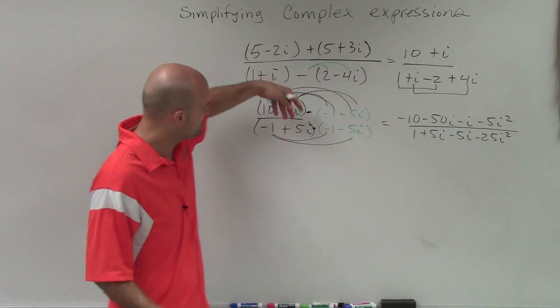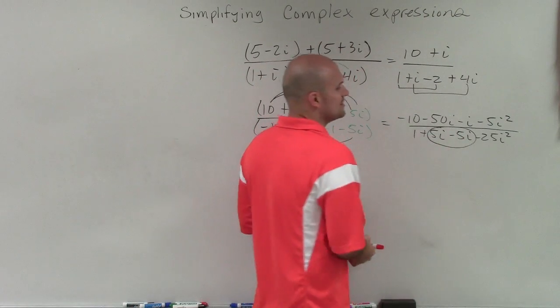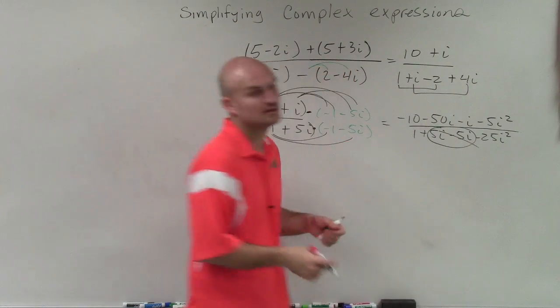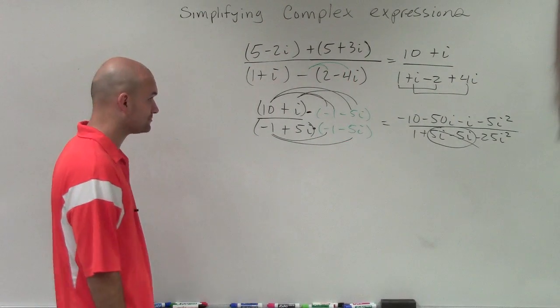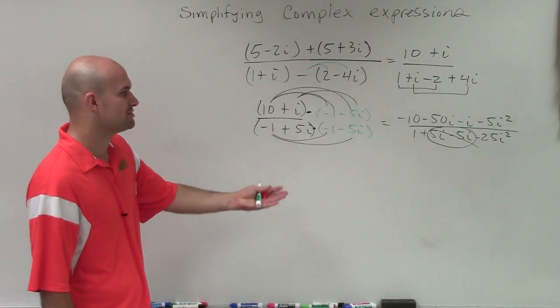So it's really important when you notice, when you multiply a number by its conjugate, what happens is our middle terms add up to 0. So we can just say these are going to be eliminated, or added up to 0.